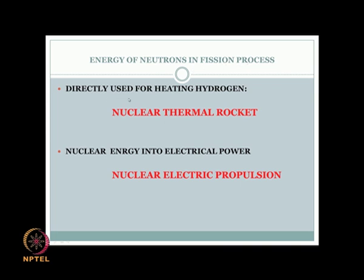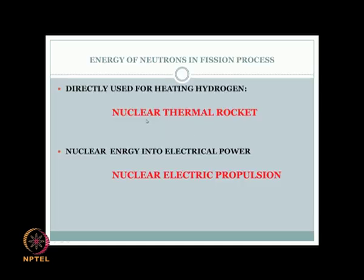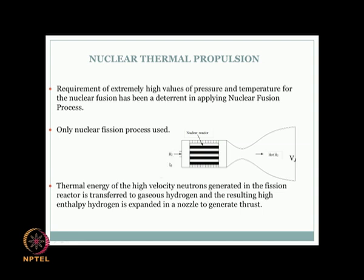The fission process can be used in two ways: if neutrons directly heat hydrogen, we have a nuclear thermal rocket (NTR). If nuclear energy is converted to electrical power used for electrostatic or electromagnetic propulsion, we have nuclear electric propulsion. Nuclear electric propulsion is more involved and has not been applied so far. The only nuclear rocket developed so far is NERVA — Nuclear Energy for Rocket Vehicle Applications — developed in the USA, which is a nuclear thermal rocket.